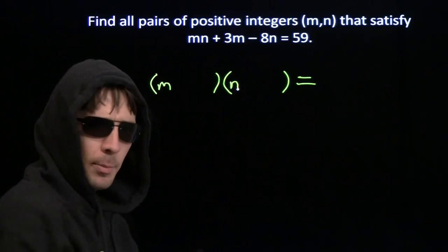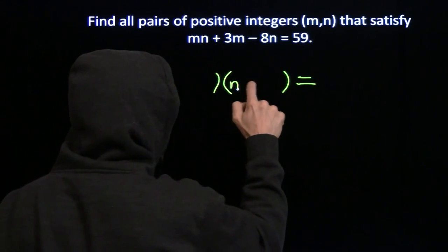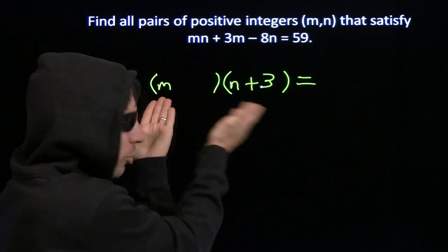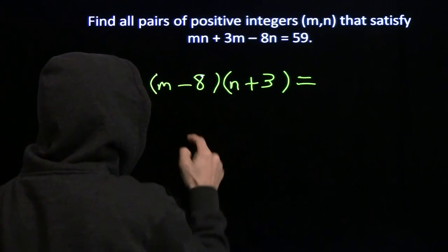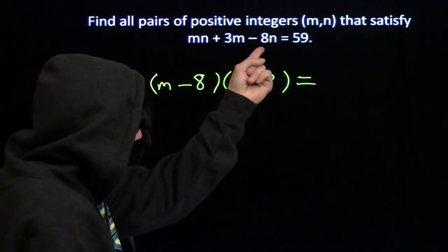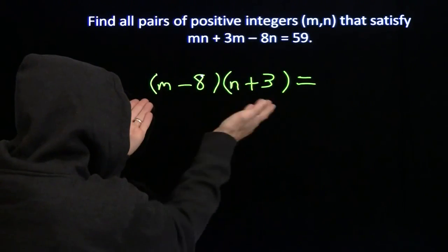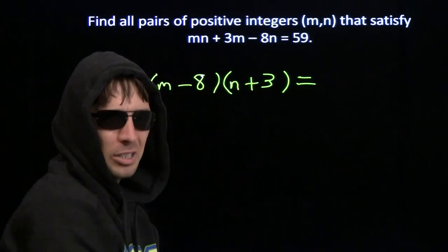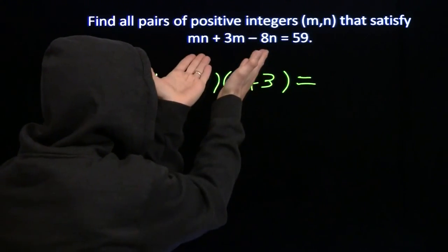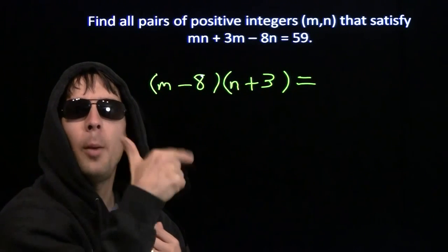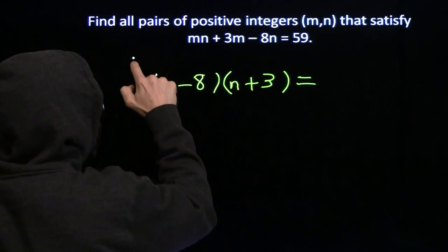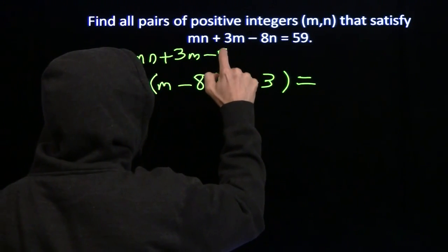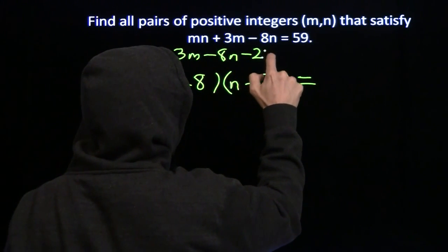Now, I need a plus 3m right there. So I need to multiply this m times a plus 3. Plus 3. There we go. And I need a minus 8n to come out when we multiply this out. So I need a minus 8 right here. Minus 8 times n. That's going to give me the minus 8n. Of course, when I multiply all this stuff out, I'm also going to get this minus 8 times a plus 3. That's going to give me a minus 24. I don't have a minus 24 up there, so I'll put one in. And that's what gets me to think subtract 24 from both sides.